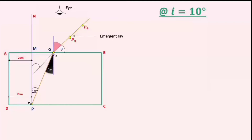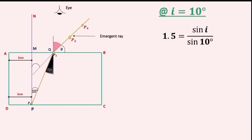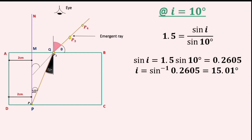We move to the next one. When i given is now 10 degrees, the same procedure still occurs at 10 degrees. The angle of refraction is also 10 degrees, because they are alternate angles. Then we follow the same procedure. The refractive index of a glass block, 1.5, is equal to sine i over sine 10 degrees. Evaluating for the value of i from that formula, we finally get the value of i, which is 15.01 degrees.